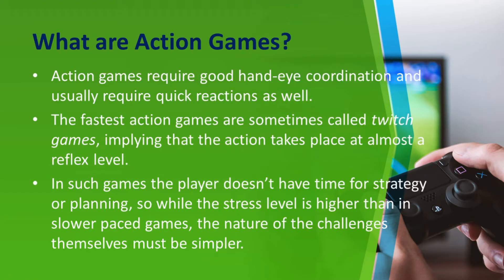So first, what are action games? Action games require good hand-eye coordination and usually require quick reaction as well. The fastest action games are sometimes called twitch games, implying that the action takes place at almost a reflex level. A good example of a twitch game will be fighting games like Tekken, wherein the game happens in real-time, fast-paced real-time. There's almost no time to strategize or think about the next move — it just involves the skills and experience you have as a player in order to properly play and win the game.